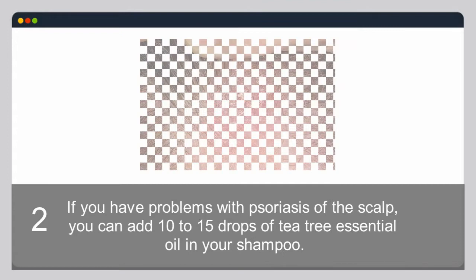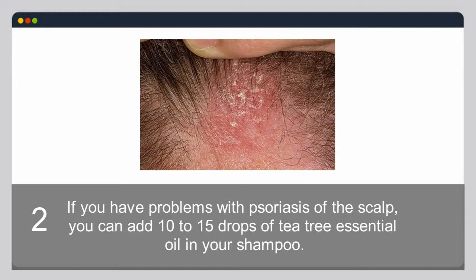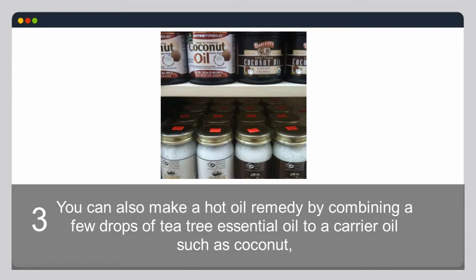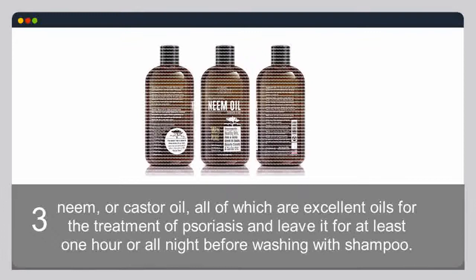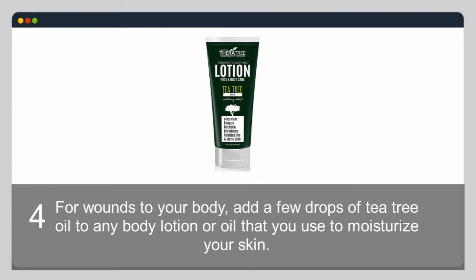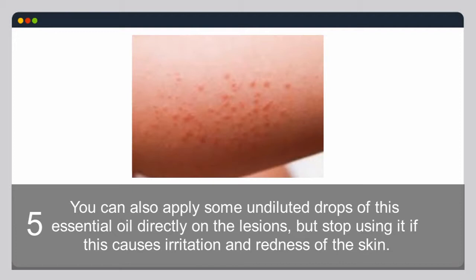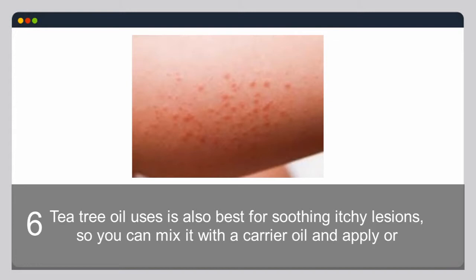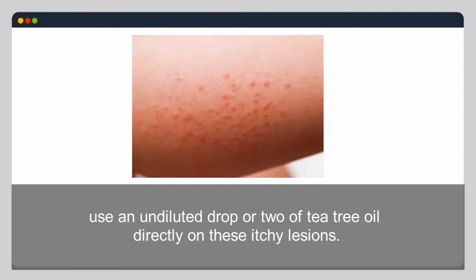For scalp psoriasis, add 10–15 drops of tea tree essential oil to your shampoo. You can also make a hot oil remedy by combining a few drops of tea tree oil with a carrier oil such as coconut, neem, or castor oil, leaving it for at least one hour or overnight before washing. For body wounds, add a few drops to body lotion or apply undiluted drops directly on lesions — stop if irritation occurs. You can also mix with a carrier oil for itchy lesions or add drops to bath water.